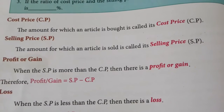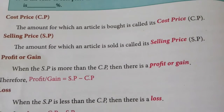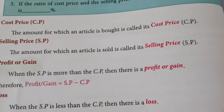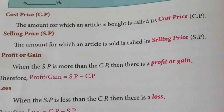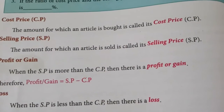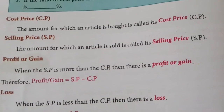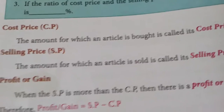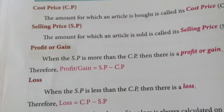For example, the TV which I purchased — after one year I am selling it to some other person, so that amount is my selling price. I purchased a TV, and after using it for one year I want to sell it to someone else — the amount they give me is the selling price. Cost price is denoted as CP, selling price is denoted as SP.